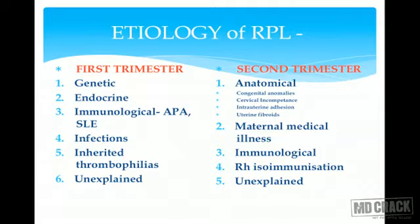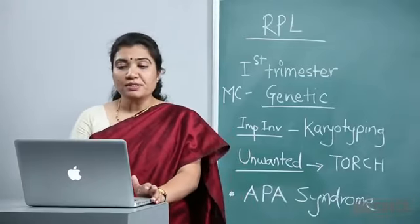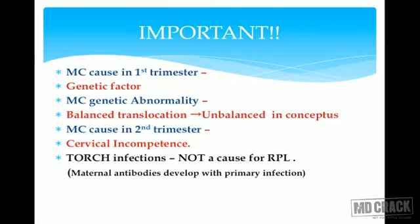Important points to remember: the most common cause is genetic factor. For isolated abortion, the most common genetic abnormality was trisomy — specifically trisomy 16. However, the most common genetic abnormality in recurrent pregnancy losses is balanced translocation. Trisomies cannot occur in all pregnancies consecutively — one pregnancy with trisomy, then another, then another — that does not happen.